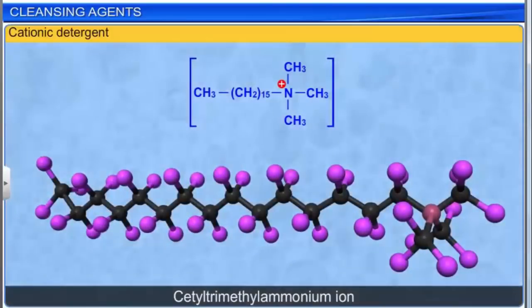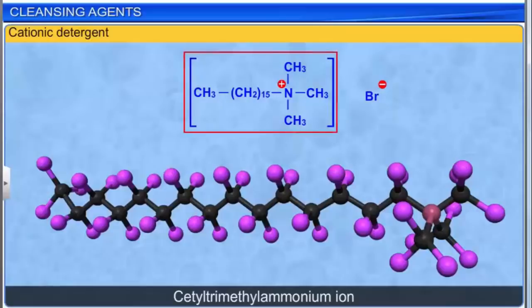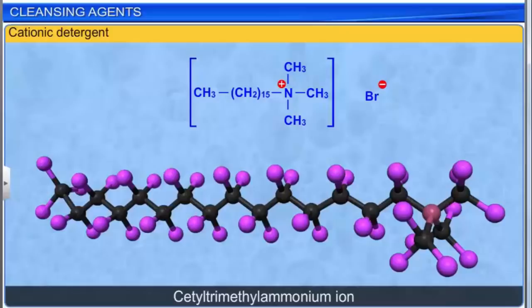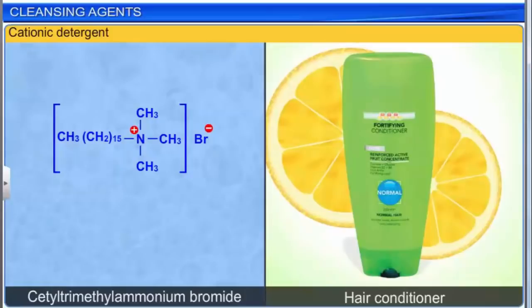Cationic detergents are quaternary ammonium salts of amines with acetates, chlorides, and bromides as anions. The cationic part has a long hydrocarbon chain with a positive charge on the nitrogen atom. Cetyltrimethylammonium bromide, which is used in hair conditioners, is a well-known cationic detergent. Being expensive, their use is very limited.